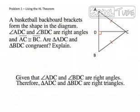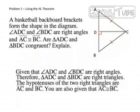The problem says that the basketball backboard brackets form the shape in the diagram. Angle ADC and angle BDC are right angles, and segment AC and segment BC are congruent. Are triangles ADC and BDC congruent? We pull out the given information: angle ADC and angle BDC are right angles, therefore triangle ADC and triangle BDC are both right triangles. The hypotenuses of the two right triangles are segment AC and segment BC, and we're given that those two segments are congruent.